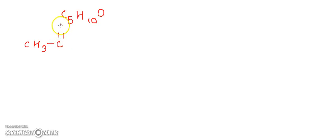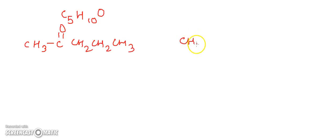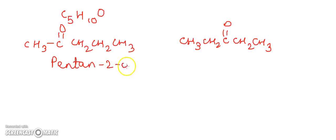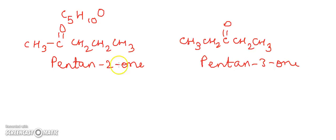For C5H10O, the position of the carbonyl group differs in the position isomers. We can have CH3-CO-CH2-CH2-CH3 and CH3-CH2-CO-CH2-CH3. Counting the carbons 1 through 5, the first is pentan-2-one and the second is pentan-3-one, so these are the position isomers for C5H10O.